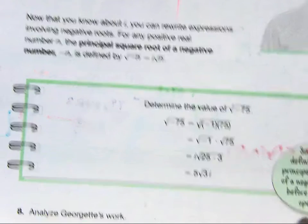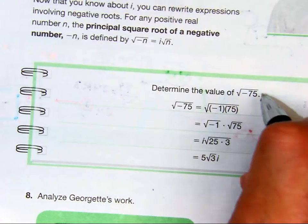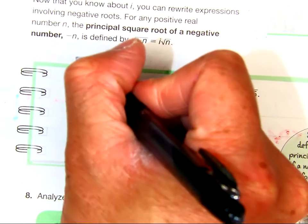All right, so let's look at this worked out example. I'm going to show you guys how to simplify the square root of negative 75.